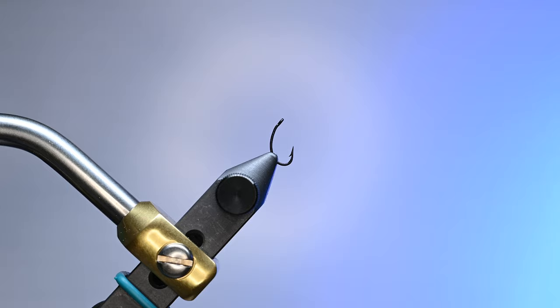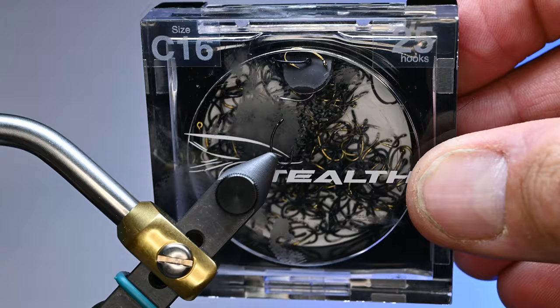What is up everybody, we're going to be tying up a midge - this is the ice cream cone variation. It's one of my go-to's in the spring as a dropper off a balanced leech. Really works well for trout.